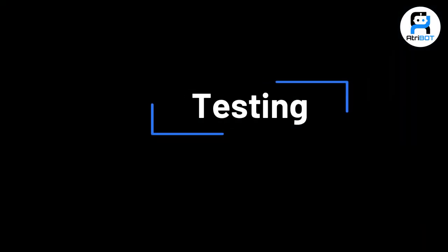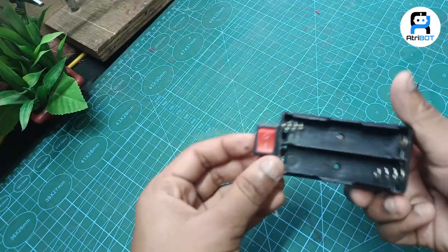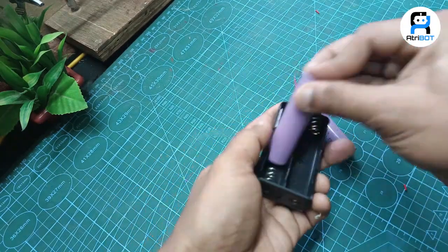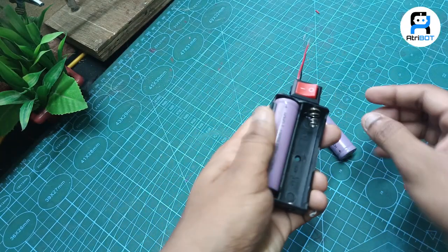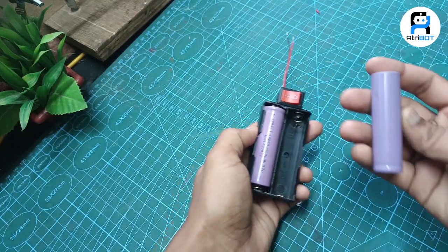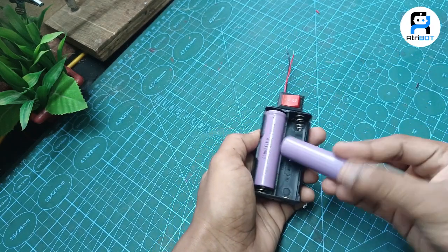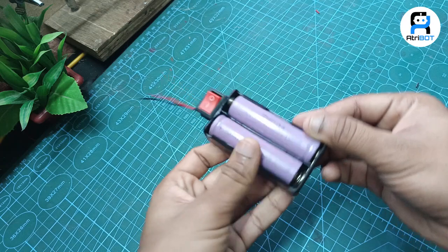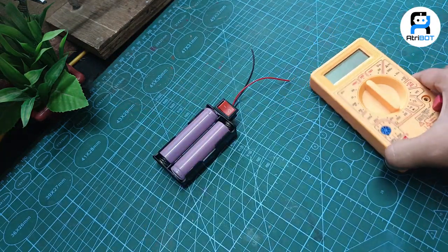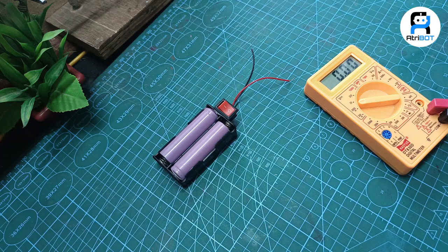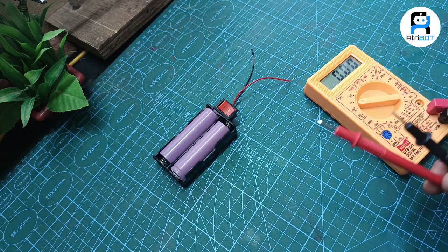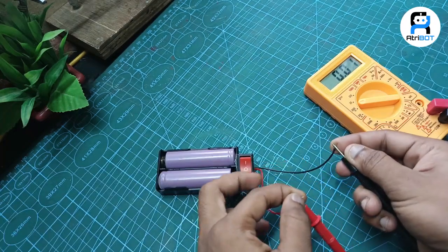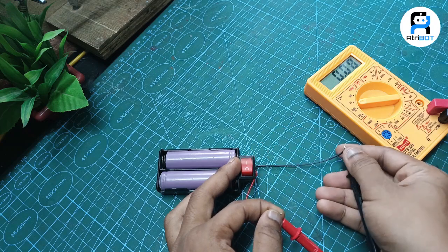Testing: Insert the 18650 cells into the 2x18650 battery holder. Turn on the SPST switch and check the output voltage using a multimeter.